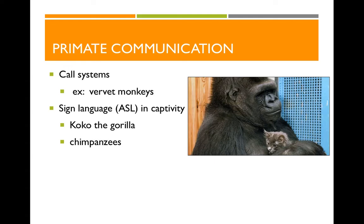Coco famously adopted a kitten she named All Ball because it had no tail and when rolled up looked like a ball. At her peak of linguistic ability, Coco had learned a vocabulary roughly equivalent to a two-year-old human child. Although Coco was able to learn and use sign language, there appeared to be a ceiling she couldn't extend beyond — perhaps telling us there's some shared capacity for language in our great ape relatives, but a limit to how far their brains can perform in a fully linguistic way.